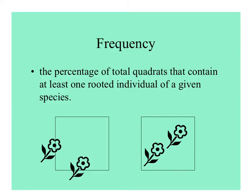Frequency is important — of all the quadrats you sample, how often does a species occur? Ecologists usually define this as plants that are rooted in the quadrat, so plants that are only leaning in from outside would not be counted.